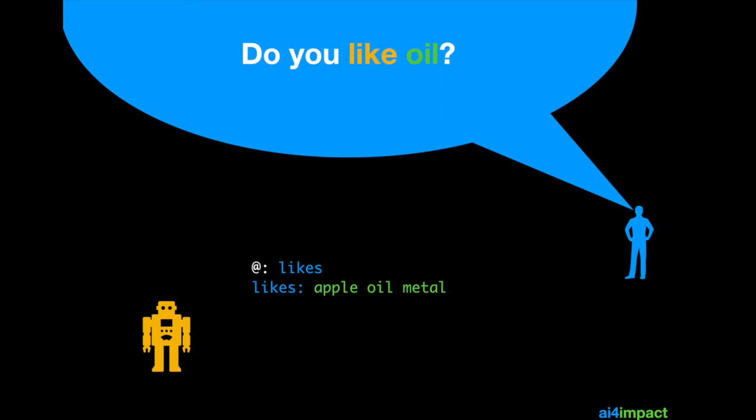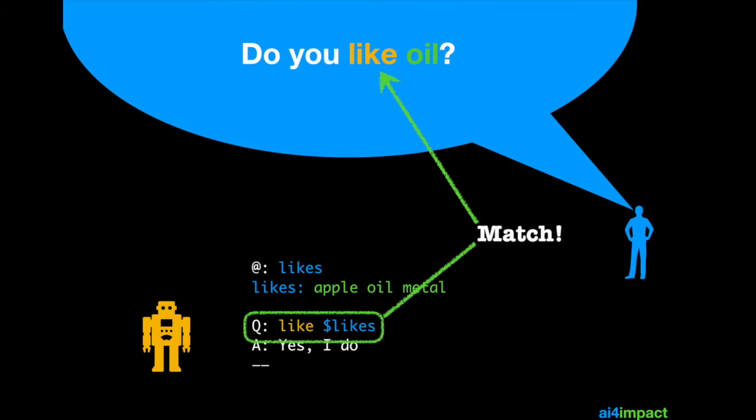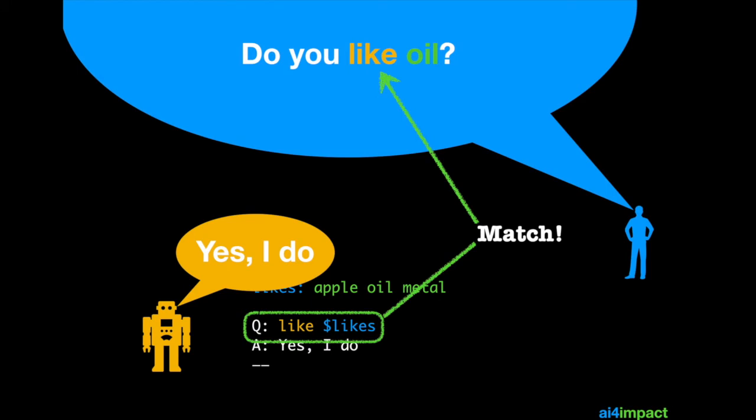What we do is we declare a type called likes and the likes has three things: apple, oil and metal. These really are what the chatbot likes. We transform the template to just have one rule. This rule uses the type to make the match. So in this case the dollar sign likes will match apple, oil or metal. So it matches like oil and your chatbot says yes I do.